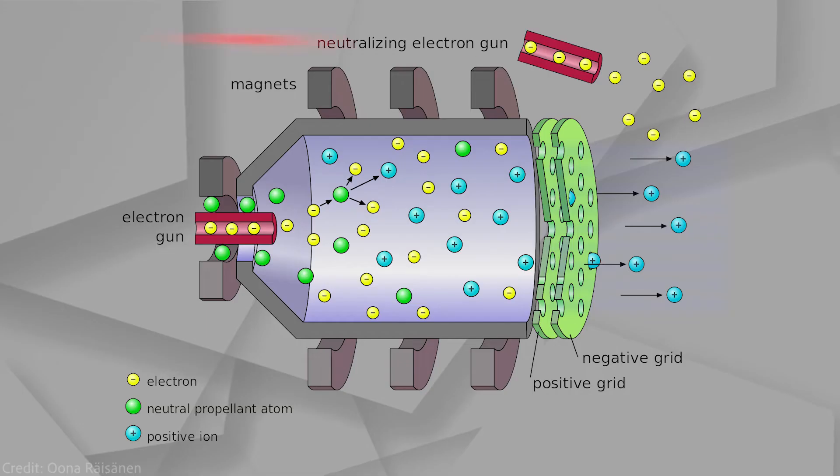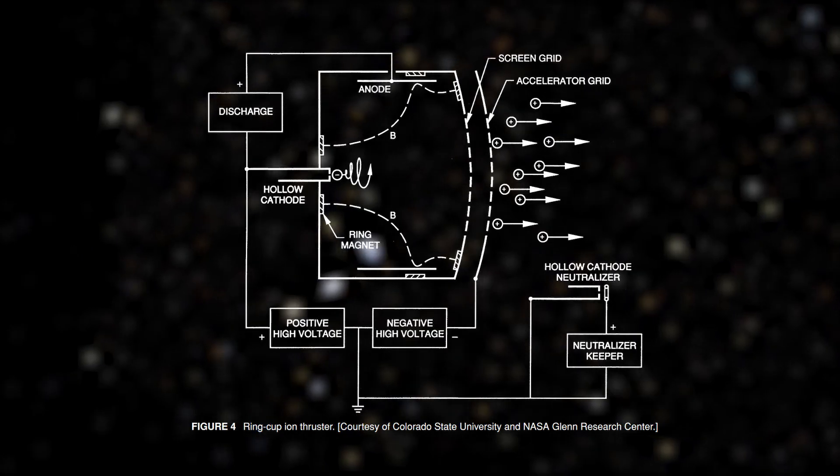But that's not all. I haven't yet said anything about the third component. Neutralizer. That's another cathode that releases the stream of electrons in such amount so that the combined charge of the material leaving the thruster was equal to zero.